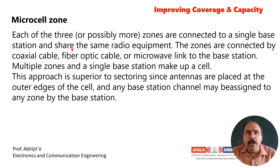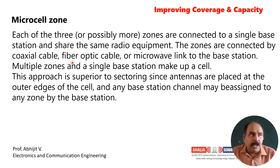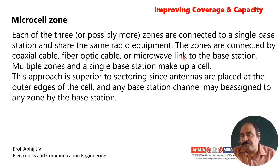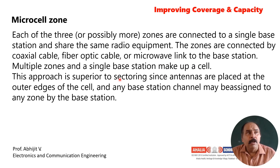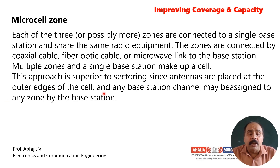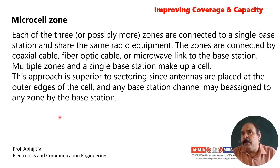Each of the three possible zones are connected to a single base station and share the same radio equipment. These zones are connected by coaxial cables, optical fibers, or microwave links — usually microwave links — to the base station. Multiple zones and a single base station make up a cell. This approach is superior to sectoring since antennas are placed at the outer edges of the cell, and any base station channel can be assigned to any zone by the base station.